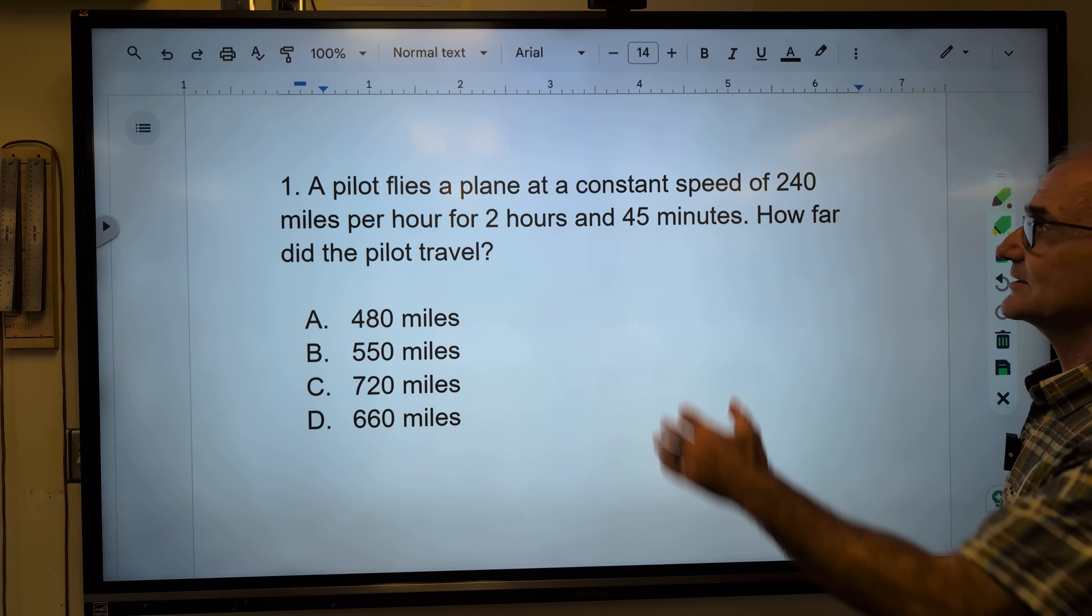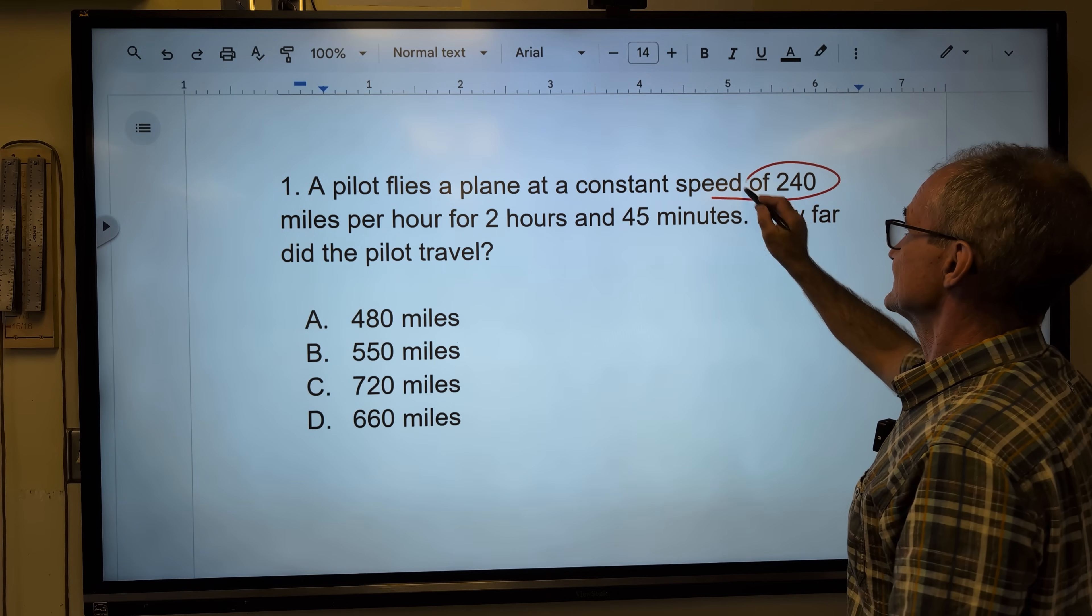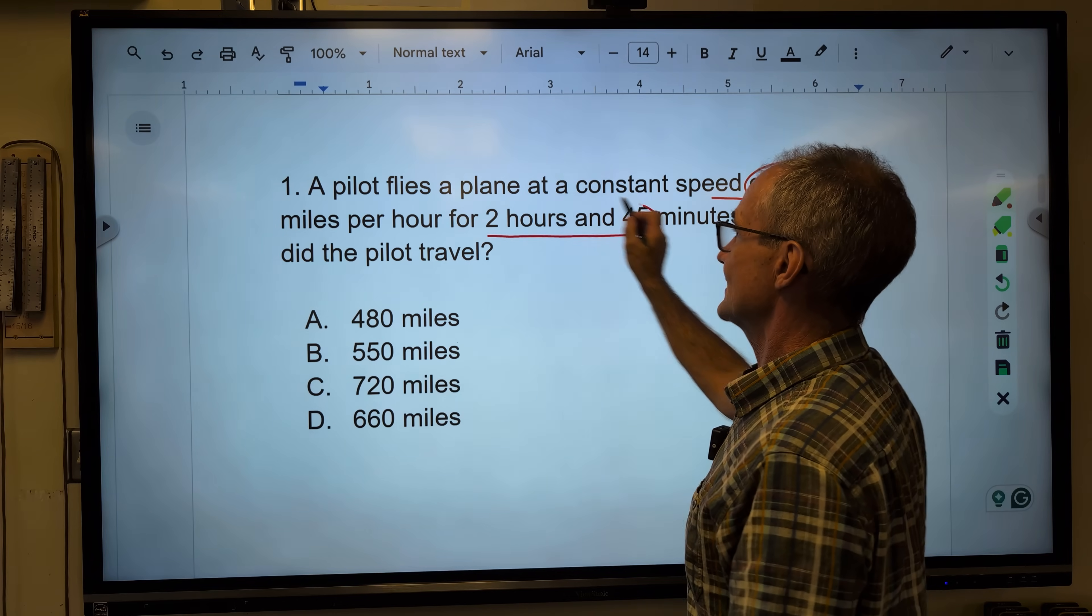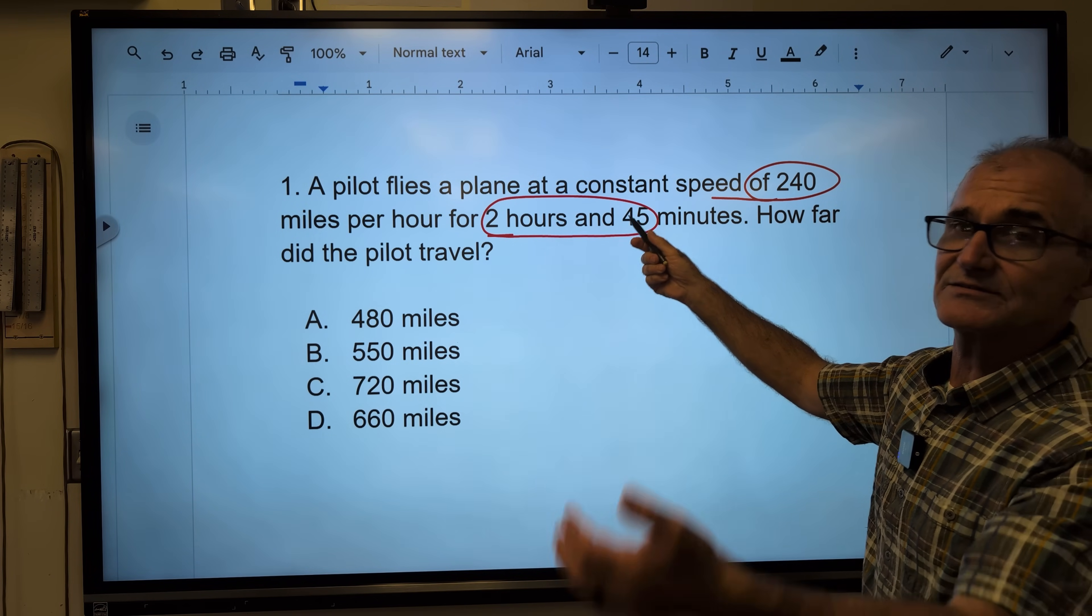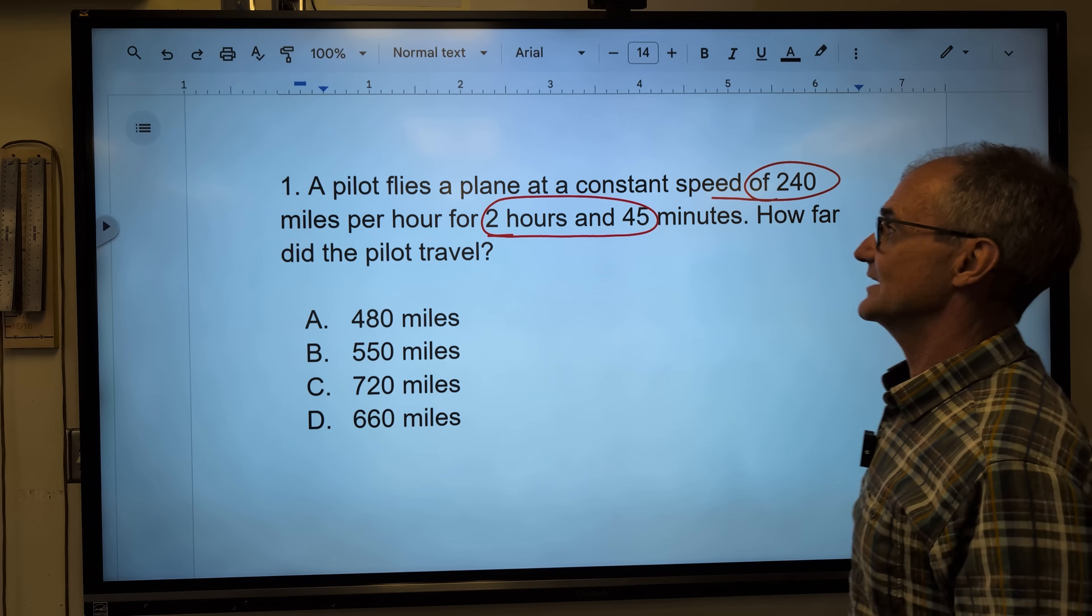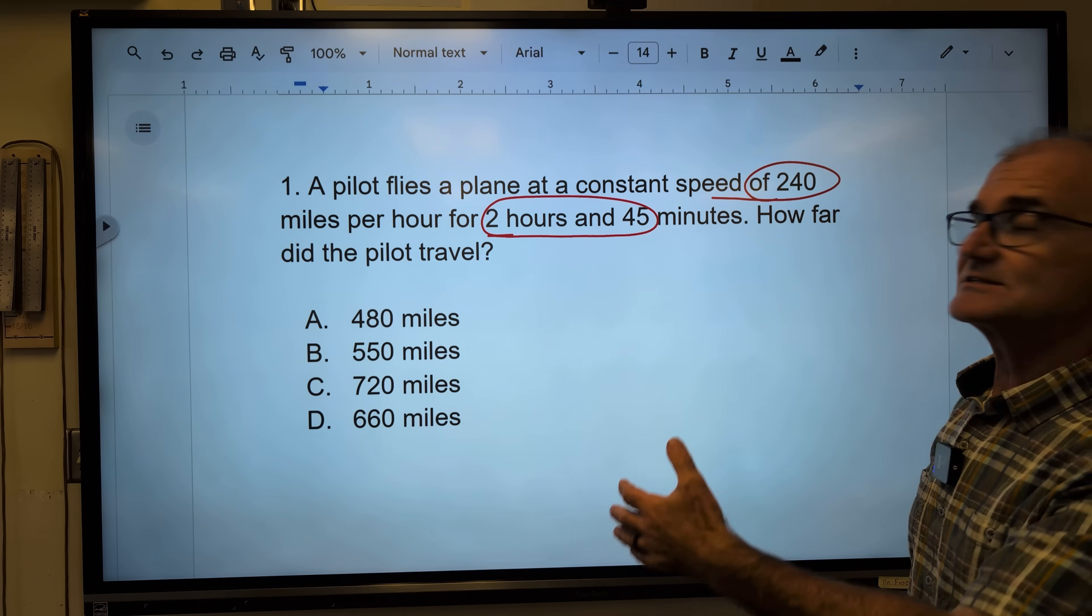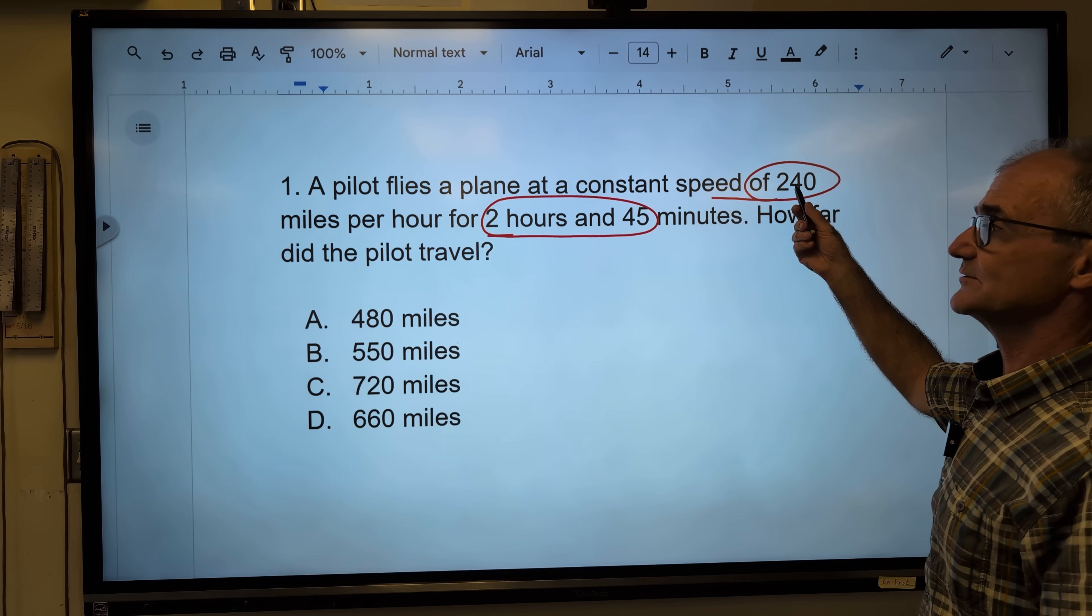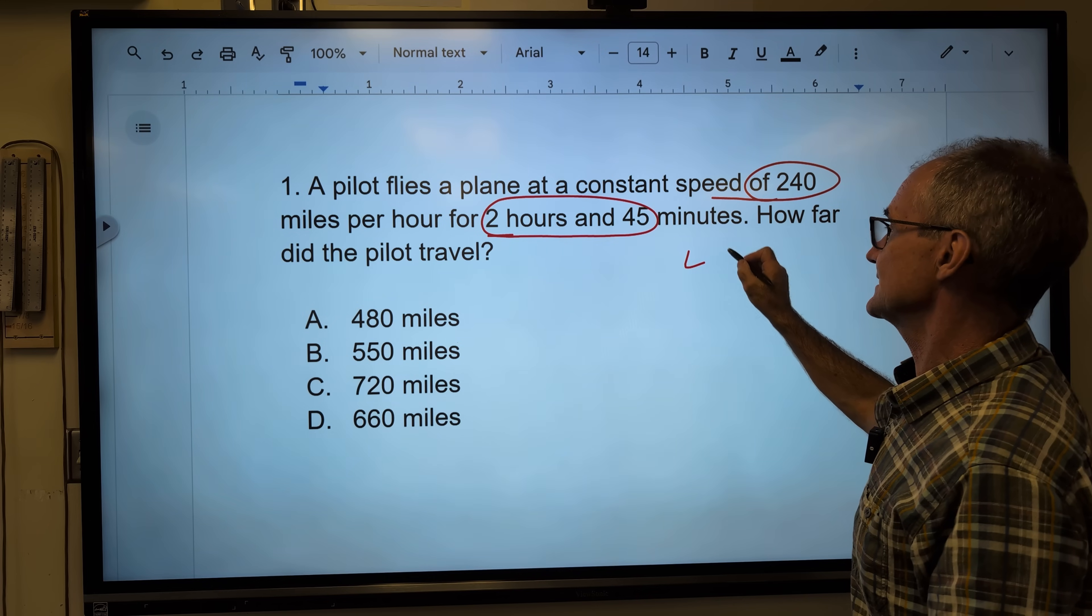First thing I do is I mark up the paragraph. A pilot flies a plane at a speed of 240, so that's a rate, and this is a time for 2 hours and 45 minutes. 45 minutes is 0.75 of an hour, so 2.75 of an hour. It's arithmetic reasoning. Let me see if I can reason my way through this. If I'm going 240 miles per hour for 2 hours, I would go 480 miles.